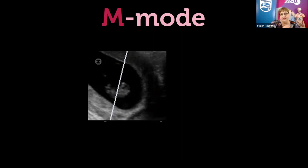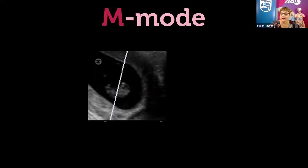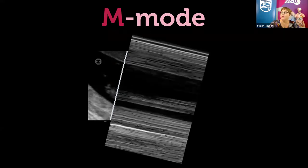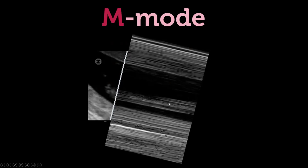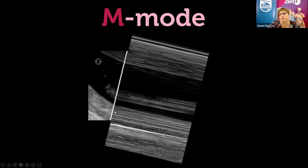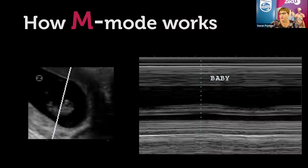The disadvantage with M-mode is that the M-line comes from the middle of the transducer and you can't move it at all. That means we need to put the object of interest in the center of the picture to get a good reflection and the best resolution. You position your M cursor and the structures along that line are represented on the trace — the black represents fluid in the gestational sac, the band of tissue represents the fetus, more fluid, and then the uterine wall at the back.